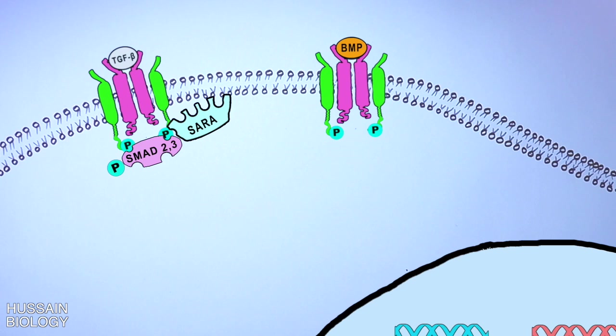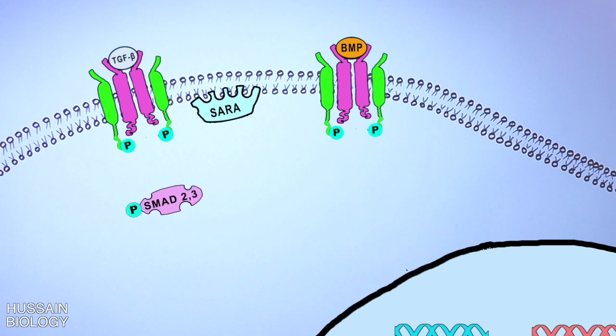Phosphorylation induces a conformational change in the MH2 domain of R-SMAD. This allows for SMAD dissociation from the receptor complex and SARA. Once it gets dissociated, it binds with the Co-SMAD molecule, that's SMAD4. Here in this animation, we see SMAD2 or SMAD3 binds with the SMAD4 molecule.